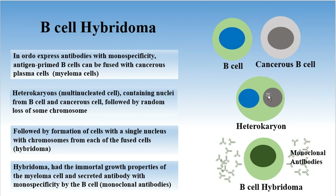This is followed by random loss of some chromosomes, then by formation of cells with a single nucleus, with chromosomes from each of the fused cells. This resulting cell is known as hybridoma, or B-cell hybridoma.